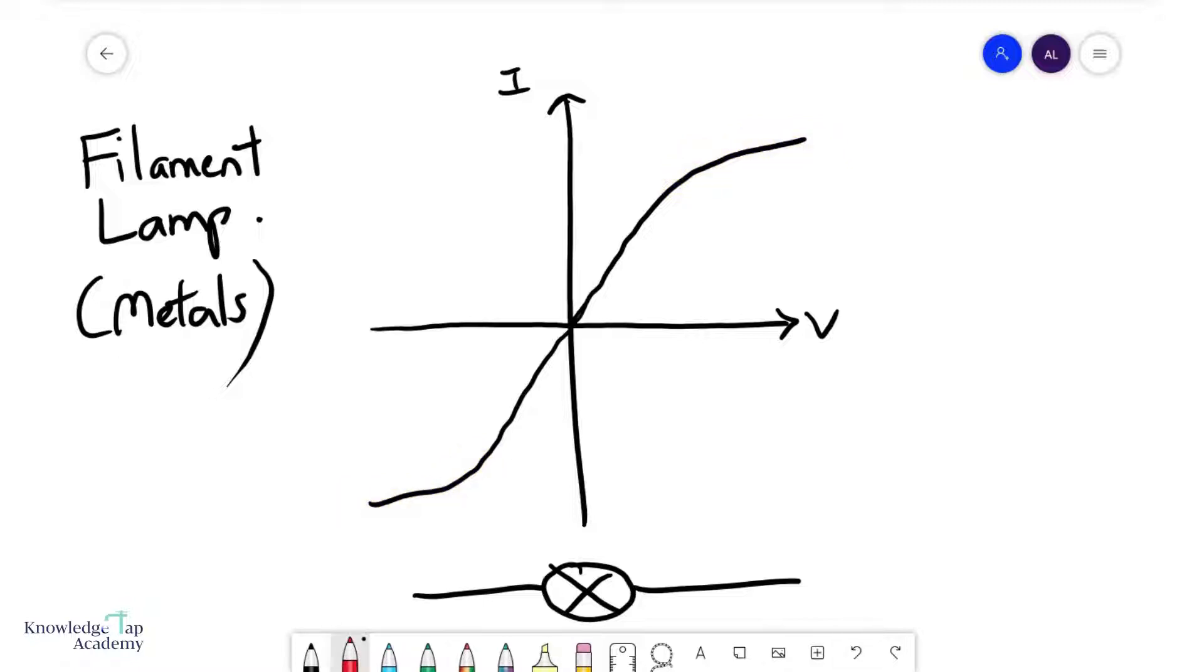Let us start to draw some lines from the origin to the curve. It's a constant resistance for a while, but after a while, as the voltage gets larger, this line gets gentler. Since the resistance is the inverse gradient of this line, you'll notice that the resistance increases as the potential difference applied across the filament lamp or the metals increases.